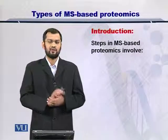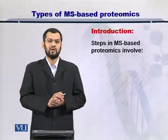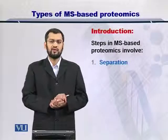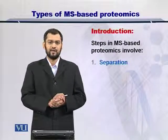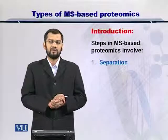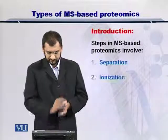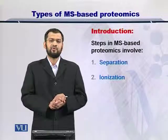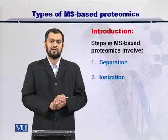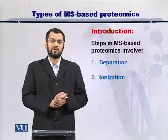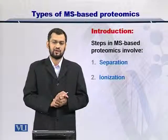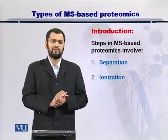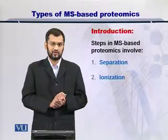Let's take a look at the steps involved in MS based proteomics. The first thing you have to do is separate proteins from a sample. Once you have separated the proteins, you need to ionize them. This involves addition of a charge onto the protein so that it can be deflected in the magnetic flux of the mass spectrometer. If the protein does not carry a charge, it will not be deflected by the magnetic field.